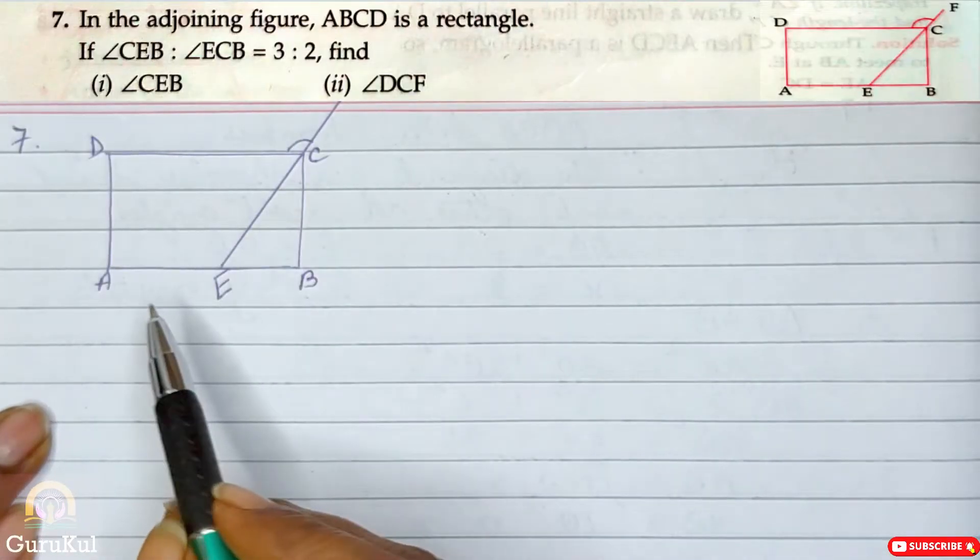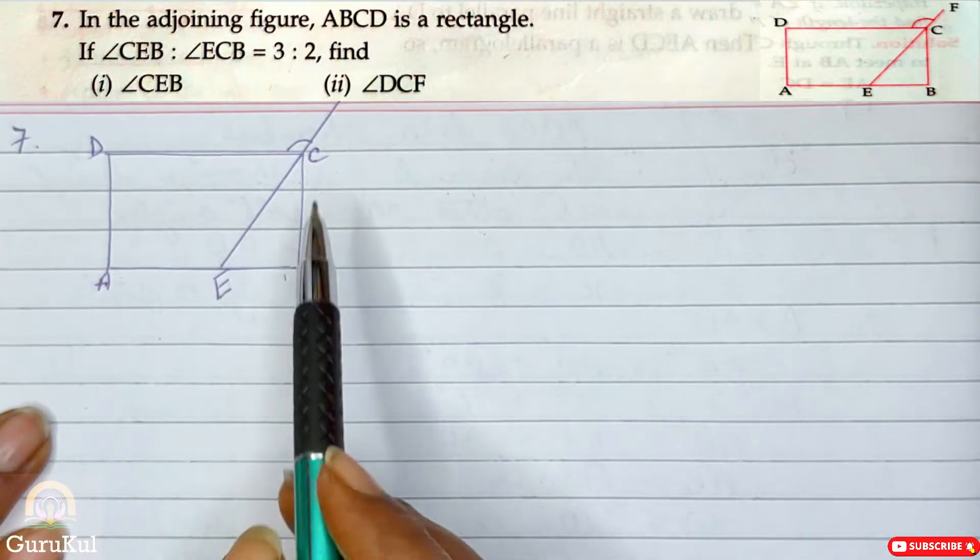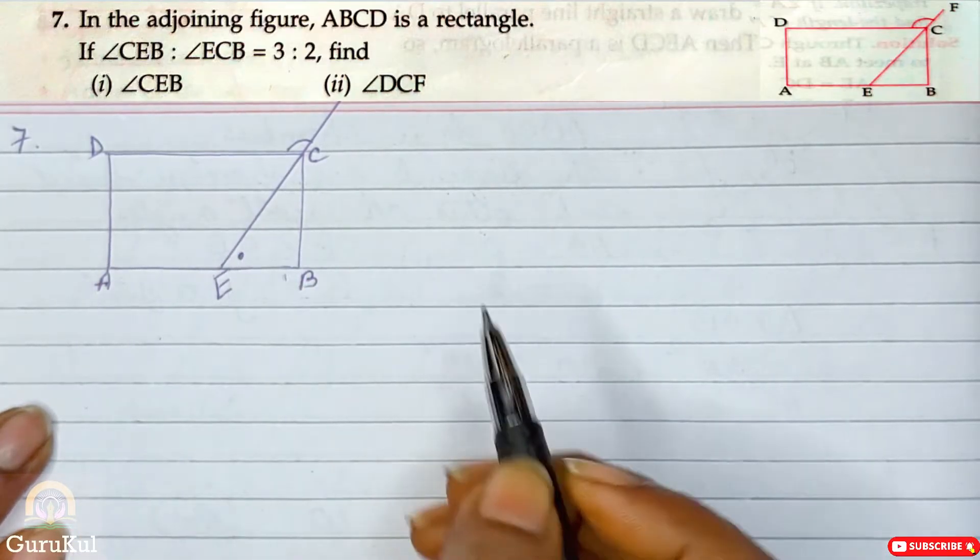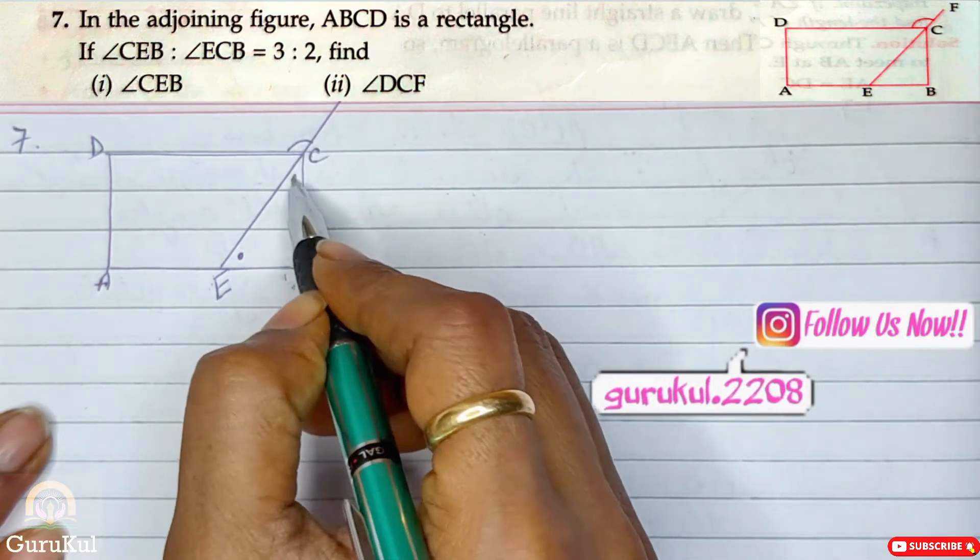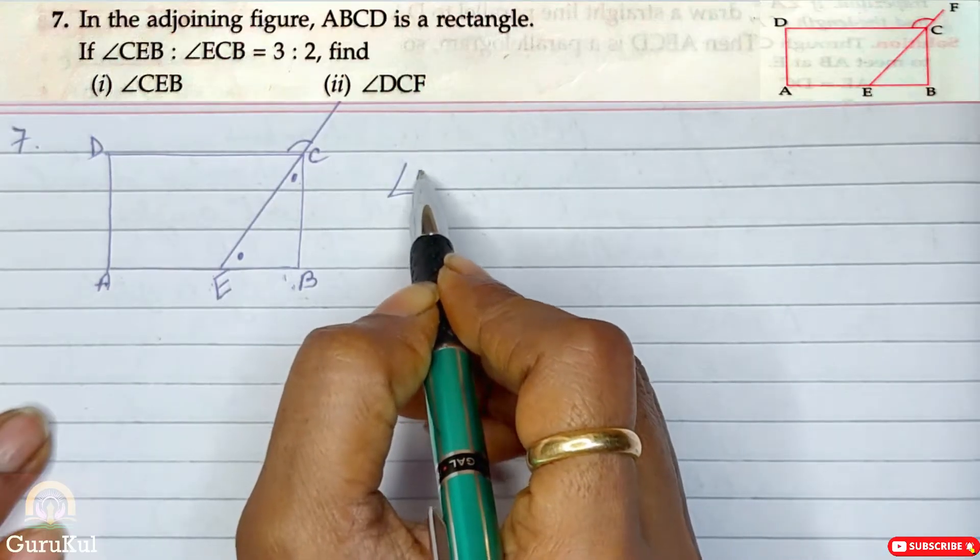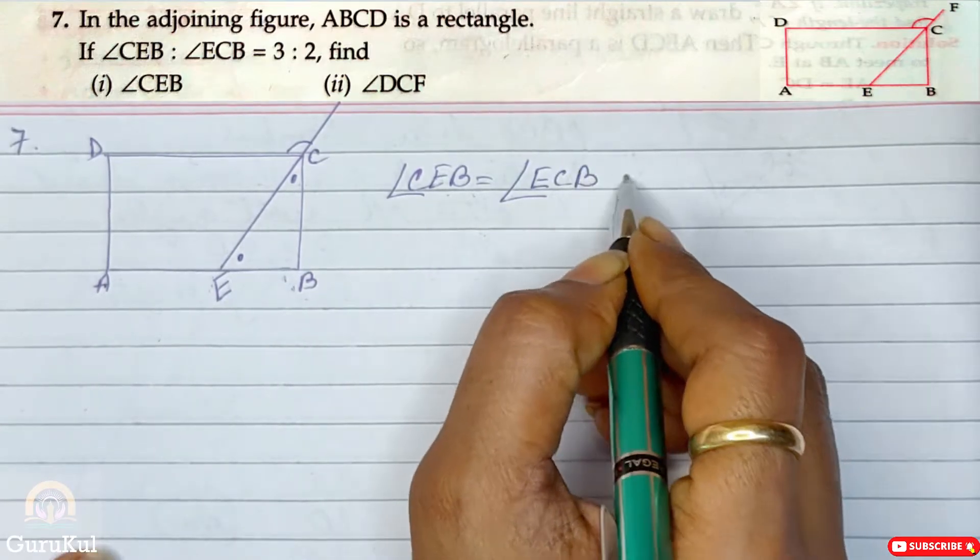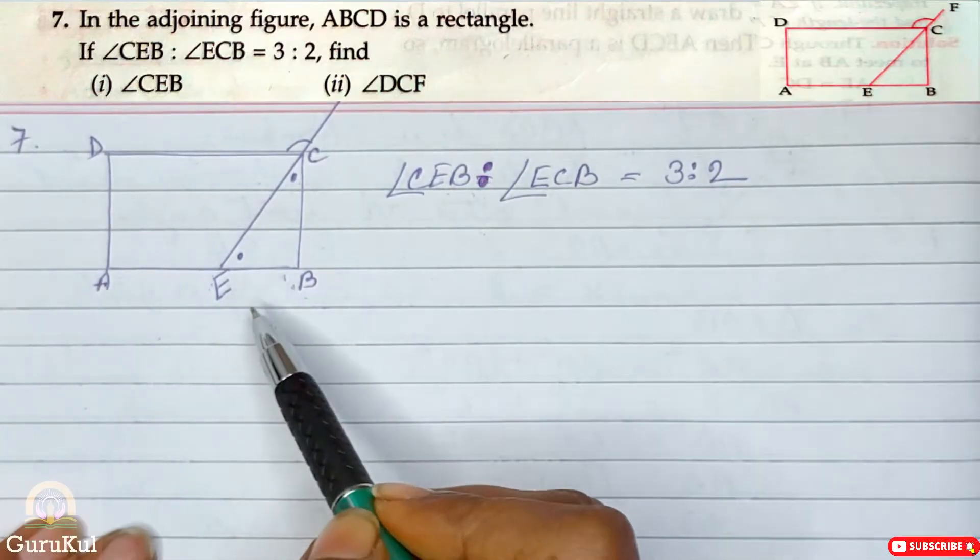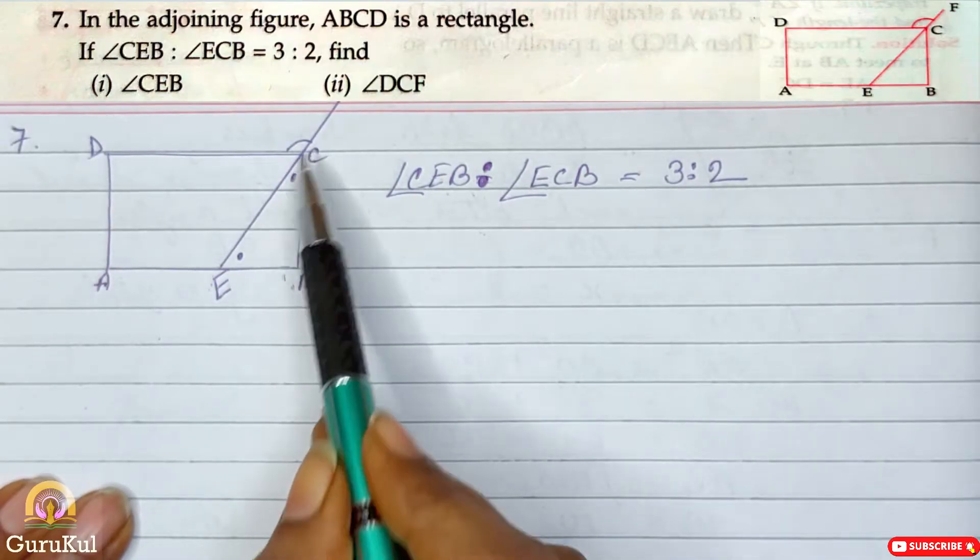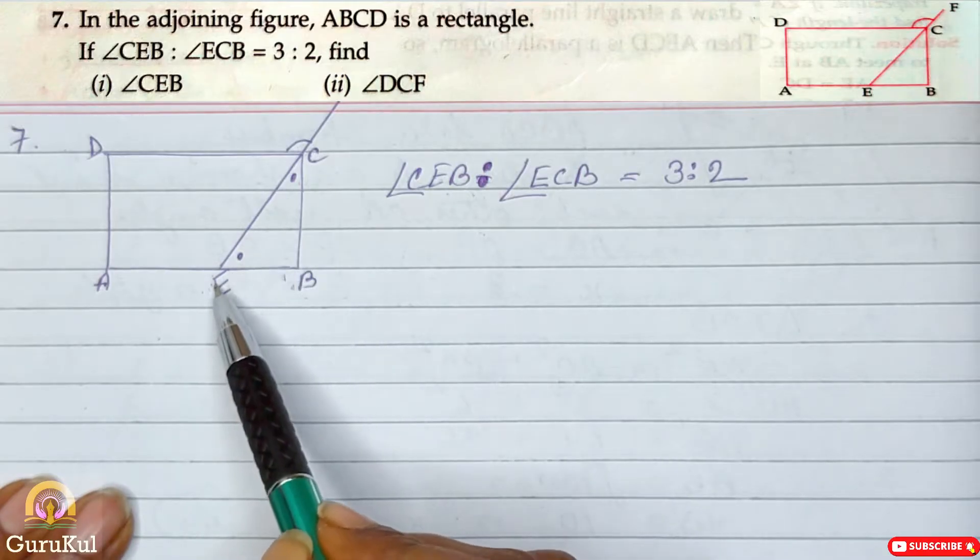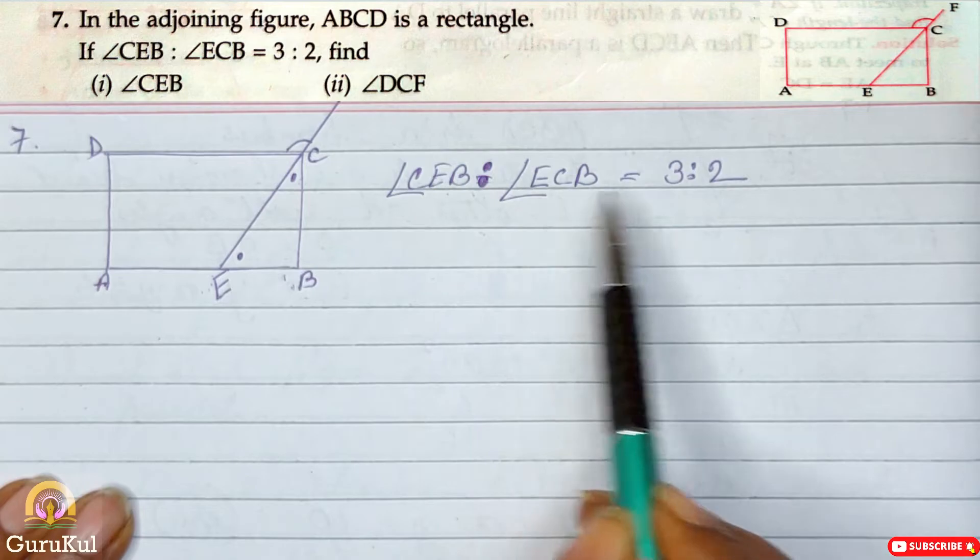Question number 7. As you can see on the screen, ABCD is a rectangle. If angle CEB to angle ECB is 3 is to 2. So here BCE is forming a triangle. And we have said that angle CEB is to angle ECB, so we are talking about these two angles. I have put a dot here. So what is the ratio of these two? 3 is to 2.